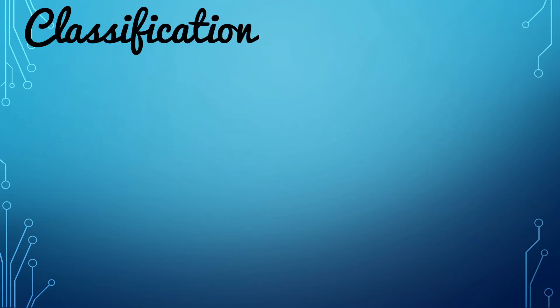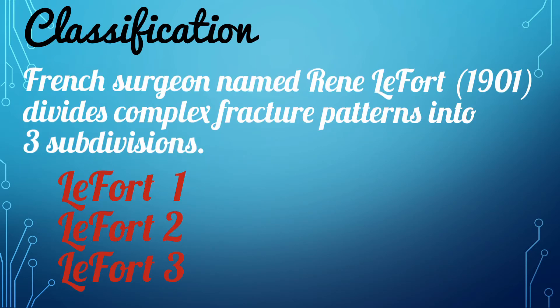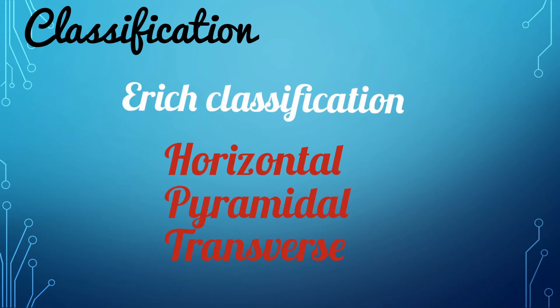A French surgeon named René LeFort, in 1901, discovered that complex fracture patterns can be subdivided into three groups: LeFort 1, LeFort 2, and LeFort 3. Other surgeons like Erick also classified these fractures as per the direction of the fracture line — the horizontal fracture, the pyramidal fracture, and the transverse fracture. The most universally used classification is the LeFort classification.